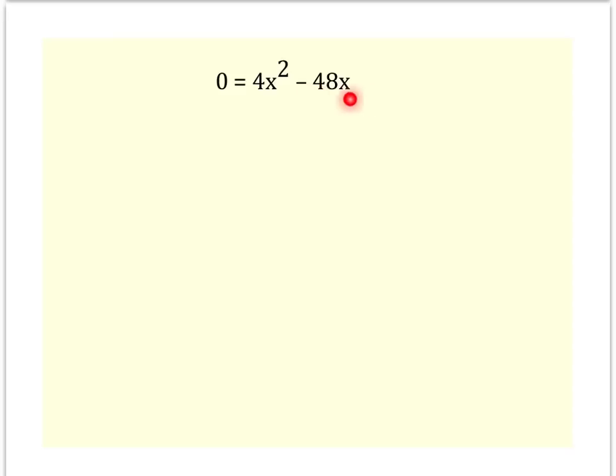It's not a trinomial, it's just a binomial because there's only two terms. They're all on the right-hand side of the equal. You could rewrite this, if you'd feel more comfortable, rewrite it as 4x squared minus 48x equals zero. As long as all the terms are on one side of the equal, it doesn't matter if it's the left or if it's the right. I just think this is kind of more what you're used to seeing.